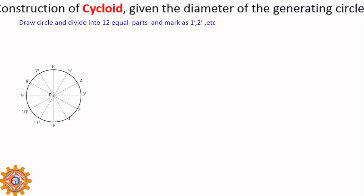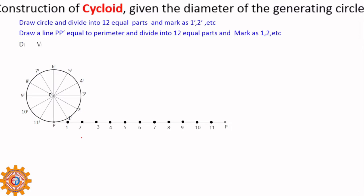How to draw a cycloid if the diameter of the generating cycle is given? Draw a circle and divide that circle into 12 equal parts and mark as 1, 2, 3, etc. Now, draw a line PP' equal to perimeter of this circle and the same thing has to be divided into 12 equal parts and mark them as 1, 2, 3, etc.